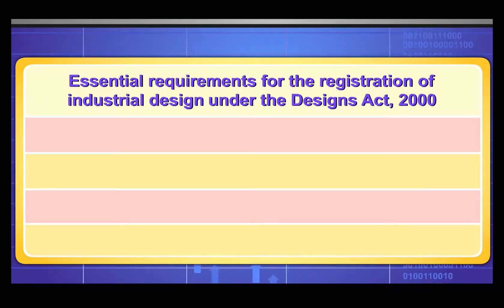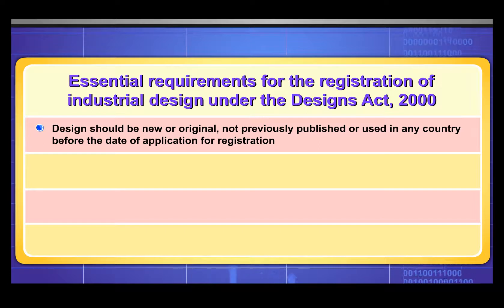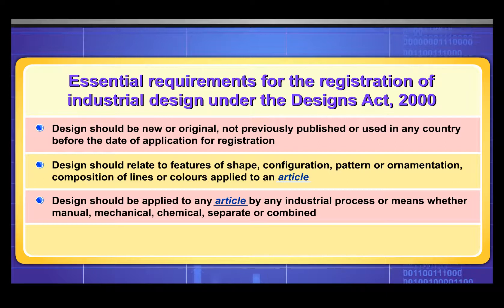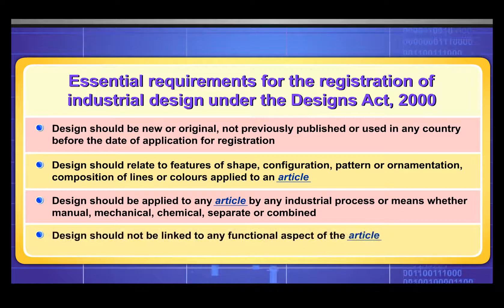Essential requirements for the registration of industrial design under the Designs Act 2000: The design should be new or original, not previously published or used in any country before the date of application. The design should relate to features of shape, configuration, pattern, ornamentation, or composition of lines or colors applied to an article. It should be applied by any industrial process — manual, mechanical, or chemical. The design should not be linked to any functional aspect of the article.